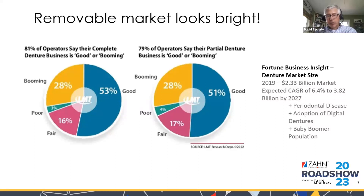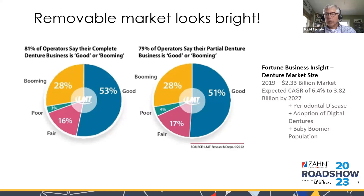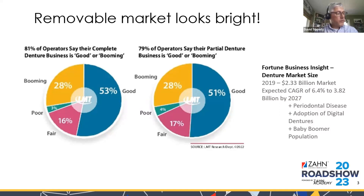Seventy-nine percent of labs say their partial business is good or booming, and many are turning away work because they can't keep up with demand. According to a Fortune Business Magazine article, the denture market is projected to grow six to seven percent by 2027, driven by increased periodontal disease, digital dentures expanding access, and the growing baby boomer population. Dentures are recession proof.